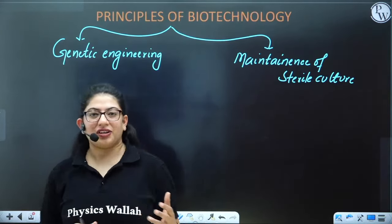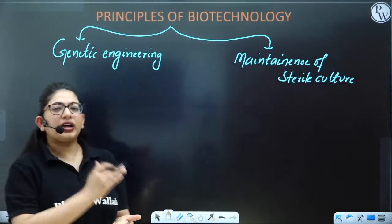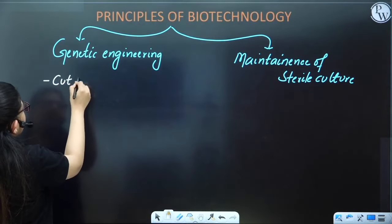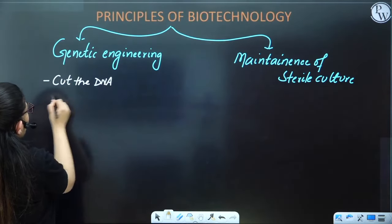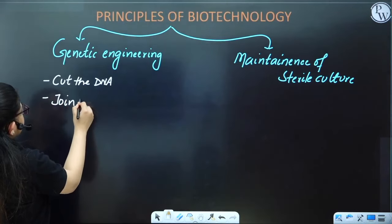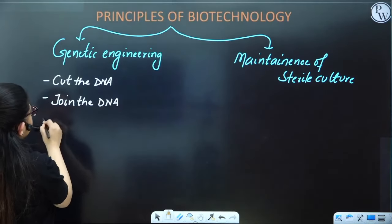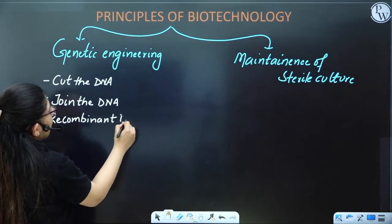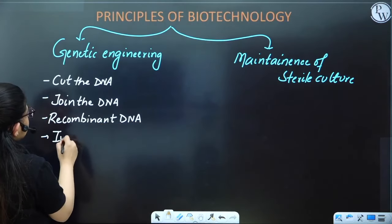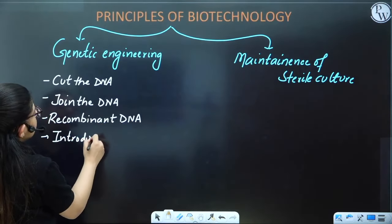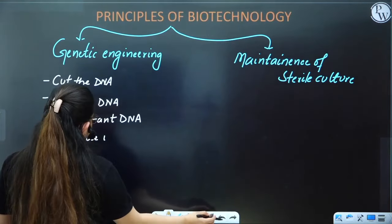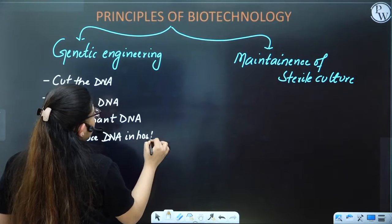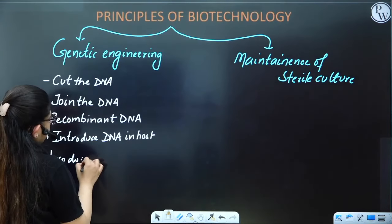Genetic engineering means gene engineering — cutting and joining DNA. In genetic engineering, we cut the DNA, join the DNA, form the recombinant DNA, and then introduce the DNA into a host to produce products.